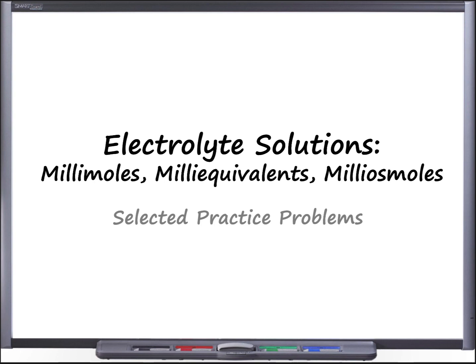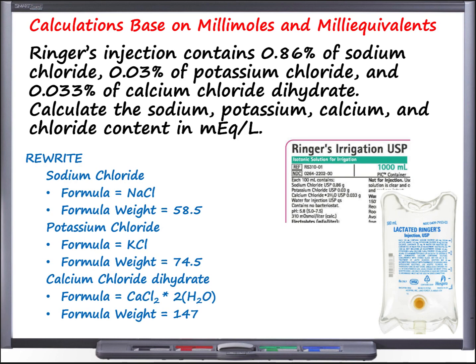Let's begin with the question: Ringer's injection contains 0.86% of sodium chloride, 0.03% of potassium chloride, and 0.033% of calcium chloride dihydrate. Calculate the sodium, potassium, calcium, and chloride content in the units of milliequivalents per liter.